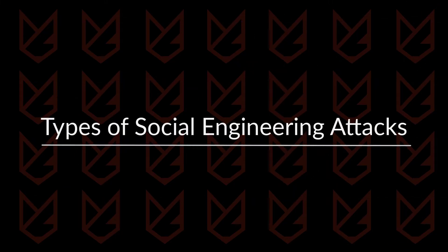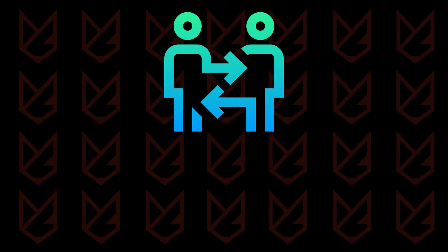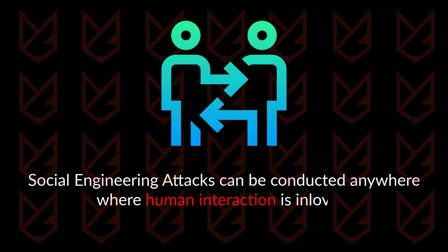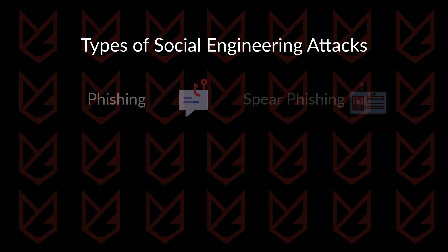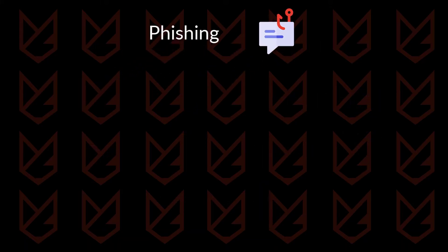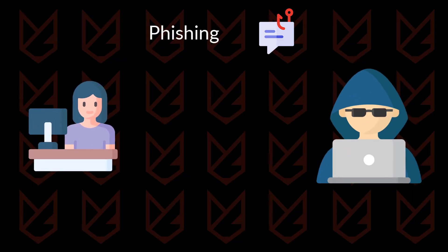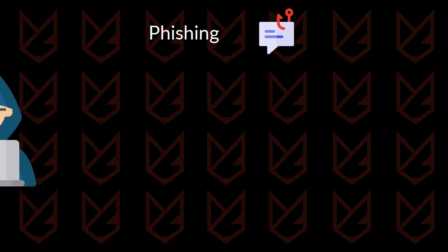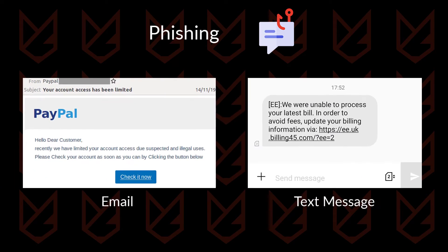Types of social engineering attacks. Social engineering assaults can be conducted anywhere where human interaction is involved. Here are the top types of digital social engineering attacks. Phishing is the most common social engineering attack. In this, the victims are tricked into providing confidential information by creating a sense of urgency, curiosity, and fear. Phishing is usually conducted through emails or text messages.